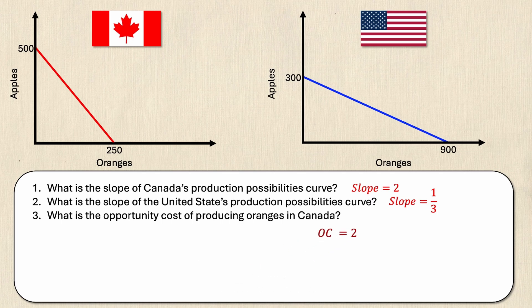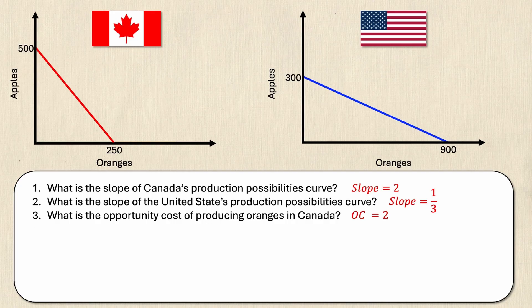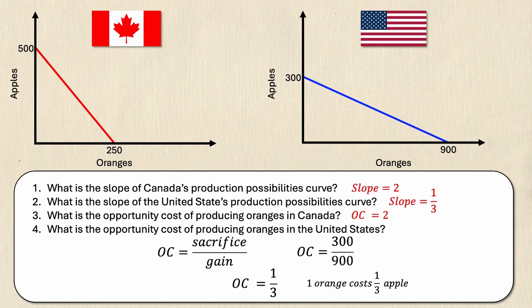Let's take a look at the United States example. So similarly you're probably looking at the answer to question two and saying well the opportunity cost must be one third, and you'll be right, but let's explain it with the formula as well. So opportunity cost is still sacrifice over gain, but this time the United States are sacrificing 300 apples in order to gain 900 oranges. If I simplify this of course I get one third, and this can be interpreted as one orange costs one third of an apple. Again the slope is the exact same as the opportunity cost as the good on the x-axis.